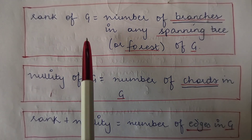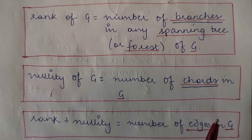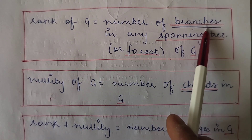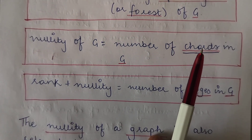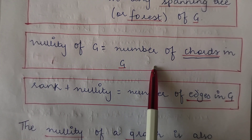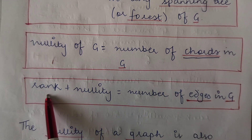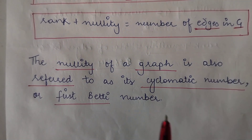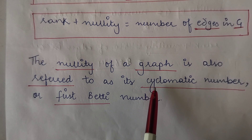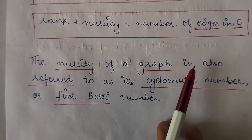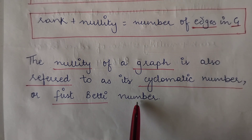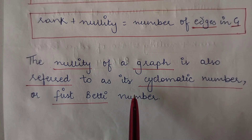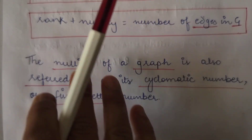Since rank includes all edges in the spanning tree or spanning forest, and nullity includes all edges not in the spanning tree or spanning forest, rank plus nullity gives you the total number of edges in the graph. The nullity of a graph is also referred to as its cyclomatic number or first Betti number, so if someone asks about the cyclomatic number or first Betti number, that is nothing but the nullity of a graph.